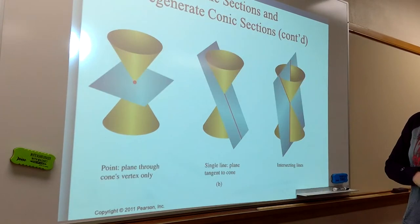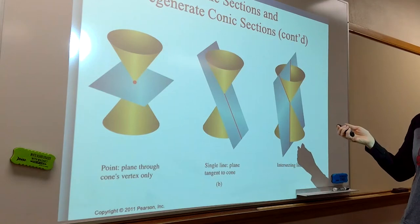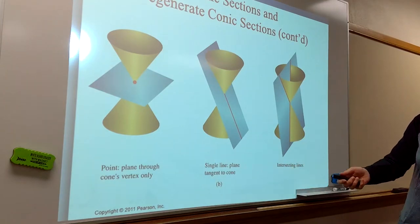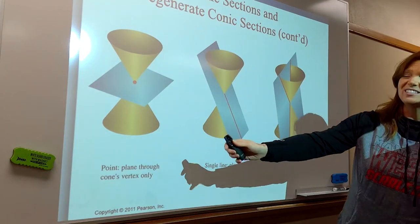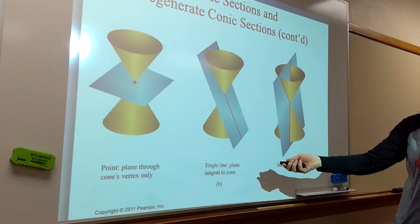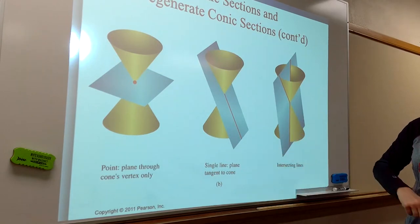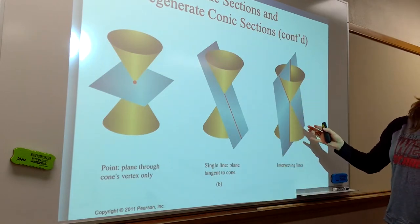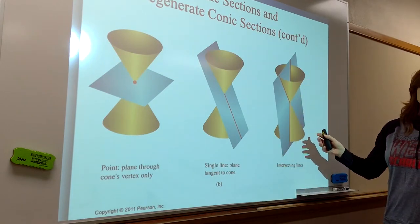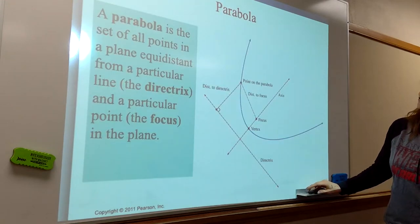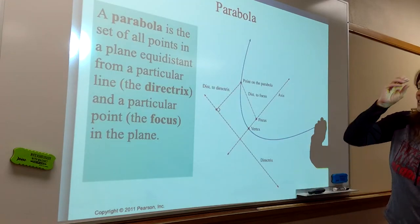Today is parabola. There are three other conic sections we're not covering — just a point, a line (y equals mx plus b), and two intersecting lines, which we actually did in chapter seven. So parabola for today.